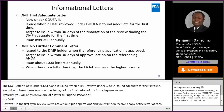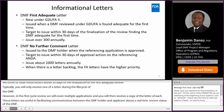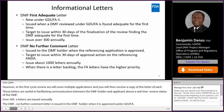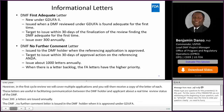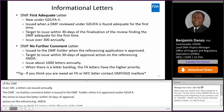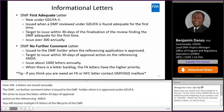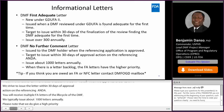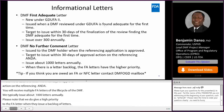The DMF no further comment letter is issued to the DMF holder when the reference application is approved under GDUFA. We also strive to issue the NFC letters within 30 days of the approval action on the reference application. You will receive multiple NFC letters over the lifecycle of the DMF. We typically issue about 1,000 NFC letters annually. Please note that we do give a higher priority to the FA letter than the NFC letter when there is a backlog of letters to process. If you believe we owe an FA or NFC letter, please send a query to the DMF OGD mailbox.